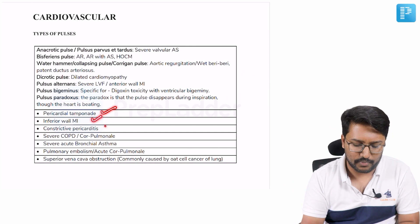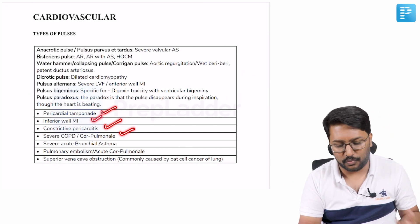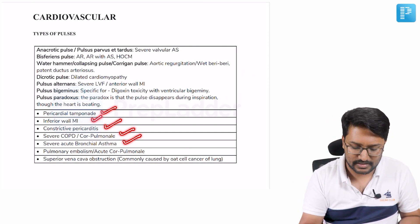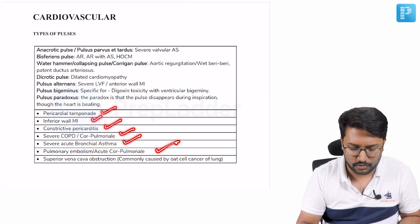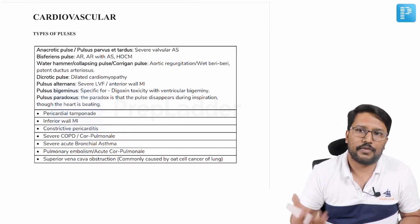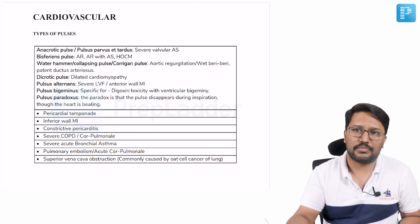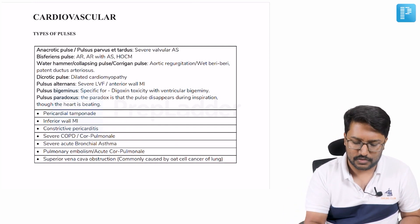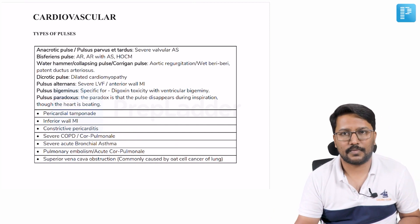Pericardial tamponade, inferior wall MI, constrictive pericarditis, severe COPD or cor pulmonale, severe bronchial asthma, pulmonary embolism, acute cor pulmonale, or superior vena cava obstruction as in case of apical tumors. All these patients can present with what is called pulsus paradoxus.